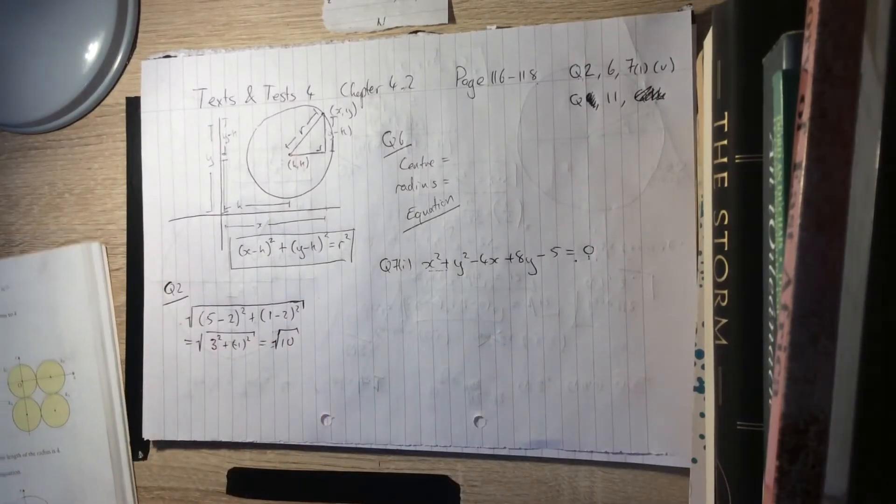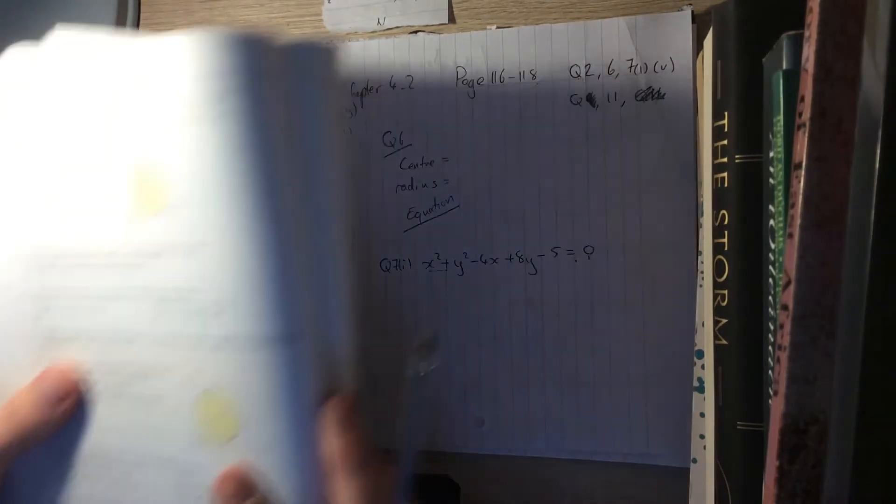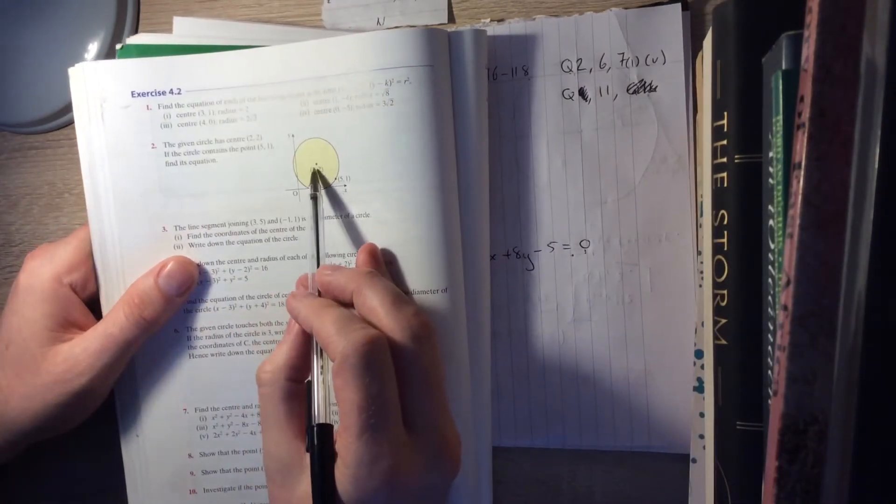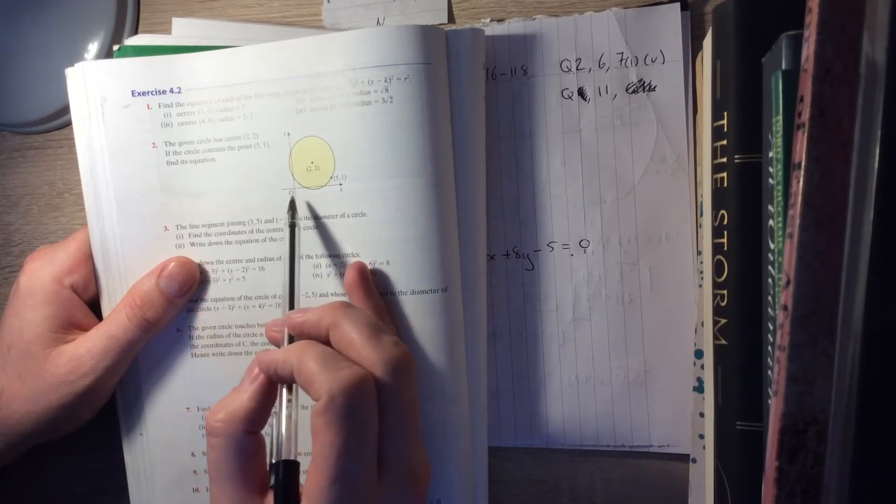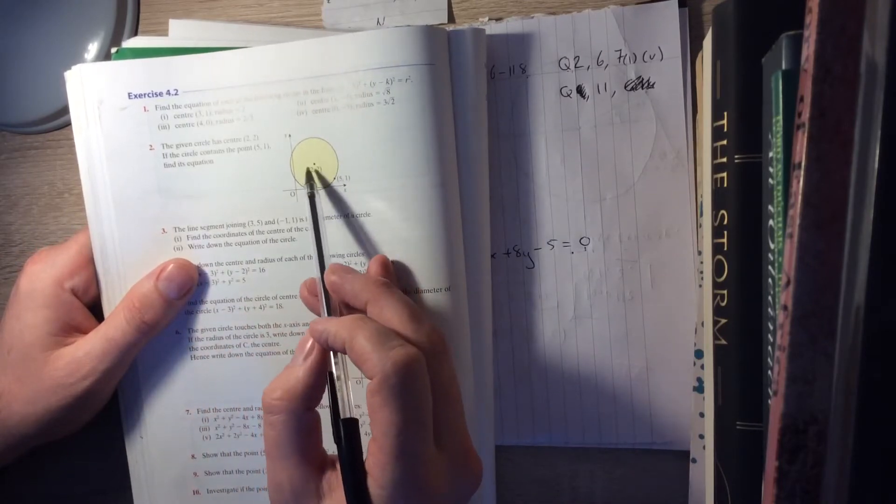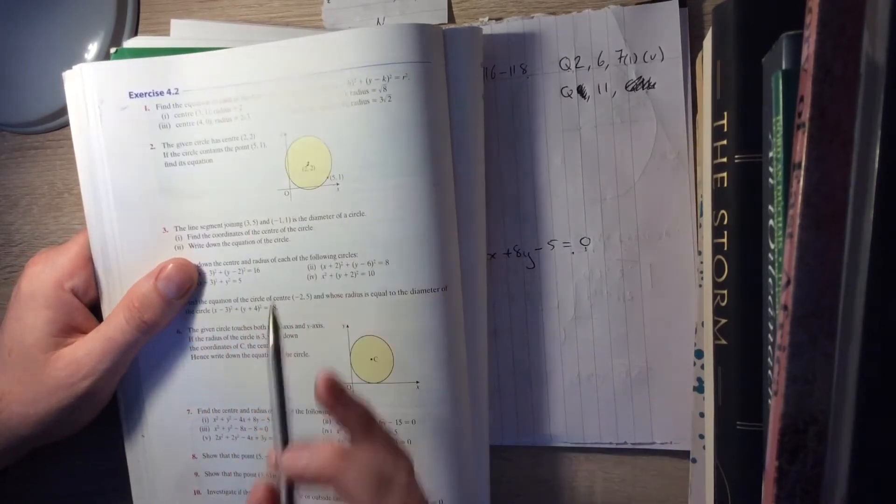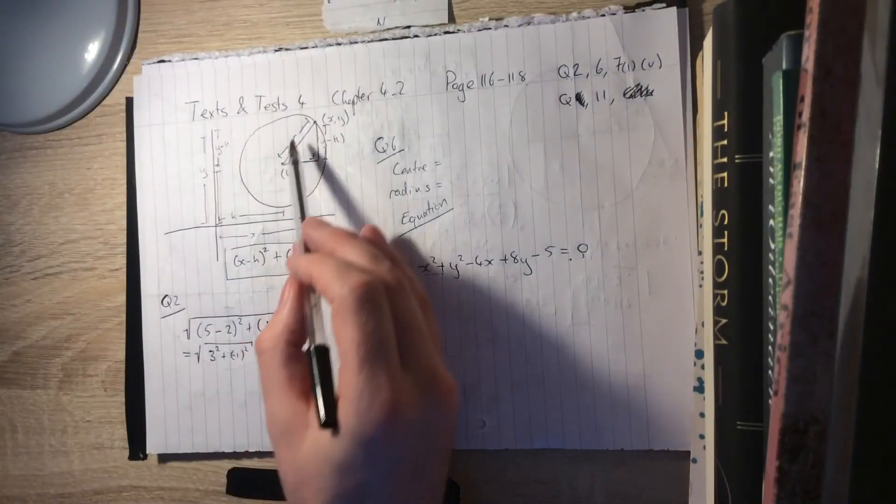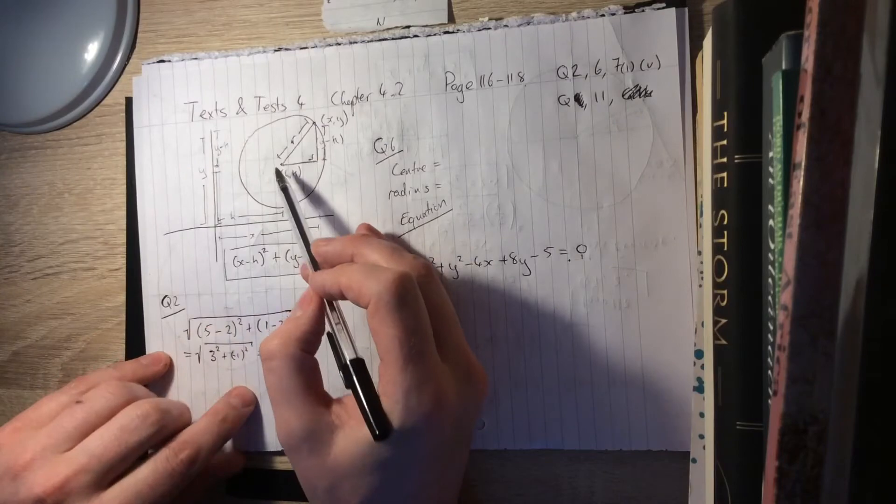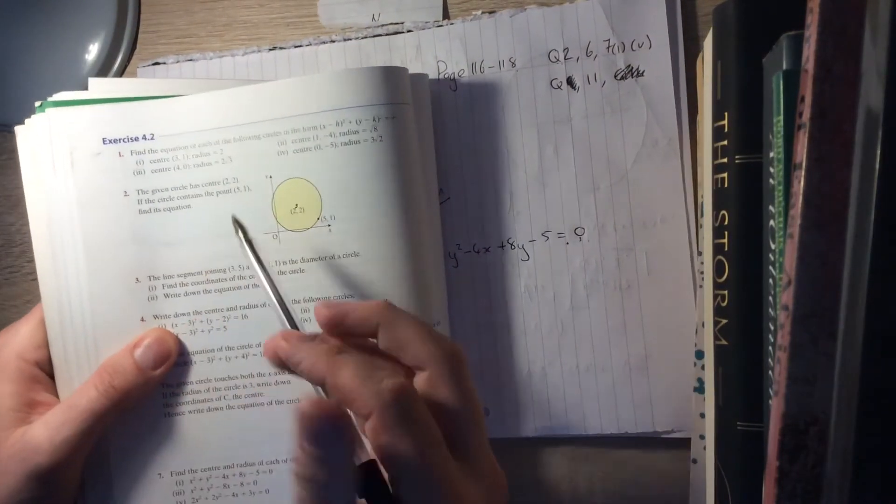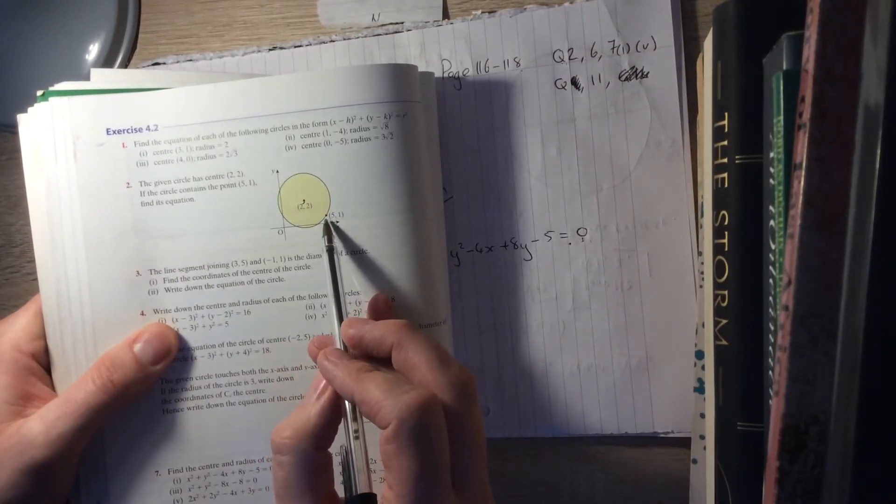So we'll start off with question 2 here, which says, The given circle has a center at 2, 2. If the circle contains the point 5, 1, find its equation. Well, to find the equation of a circle, you need to know its center and you need to know its radius. So you need h, k and you need r. Well, h, k we know. That's 2, 2. So what we're looking for is the distance between 2, 2 and 5, 1.